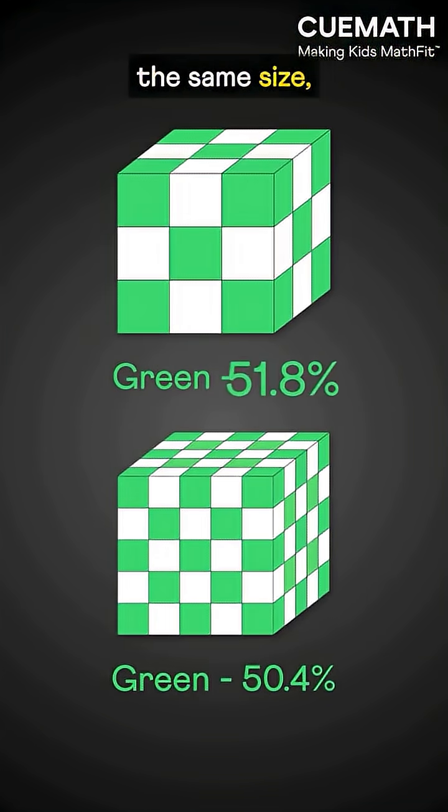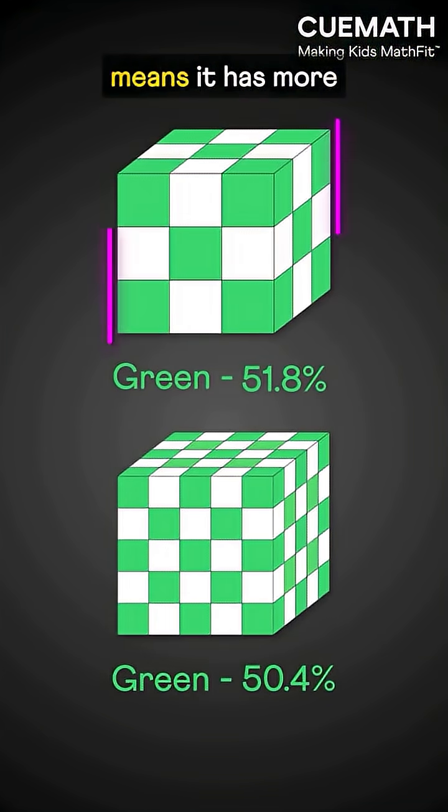Since both cubes are of the same size, the higher green percentage in the first cube means it has more green volume.